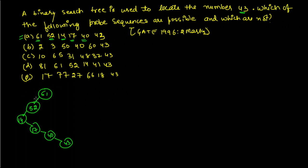Checking option A: all data less than 61 is correct, all data in the subtree is less than 52, then data should be greater than 14, data greater than 17, and data greater than 40. Therefore this sequence is correct.